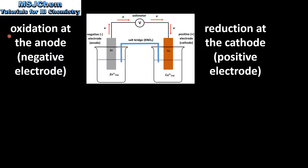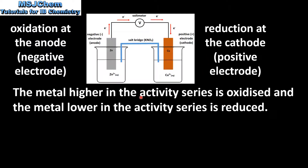In the previous slide we saw that oxidation occurs at the anode, which is the negative electrode, and reduction occurs at the cathode, which is the positive electrode. Using the activity series we can determine which metal will be oxidized and which metal will be reduced. The metal higher in the activity series is oxidized and the metal lower in the activity series is reduced.